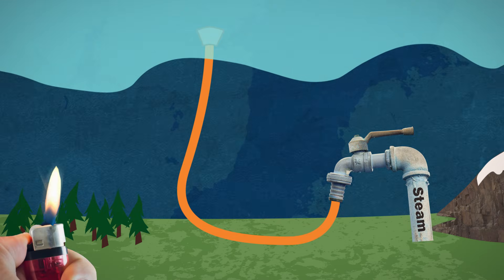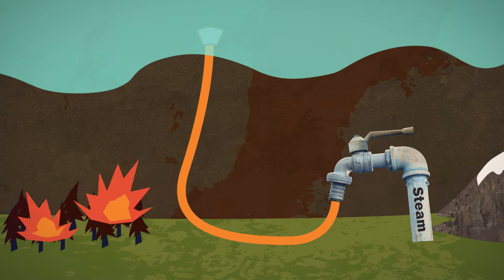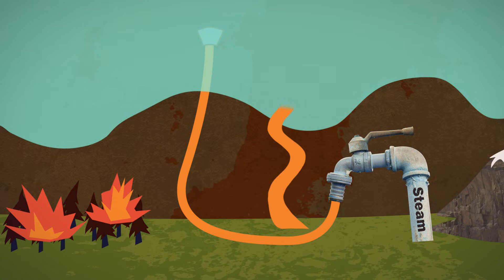However, if something else heats the world up, the atmosphere can soak up more water vapor, which traps even more heat. Because of this feedback loop, water vapor only amplifies temperature changes caused by other things.